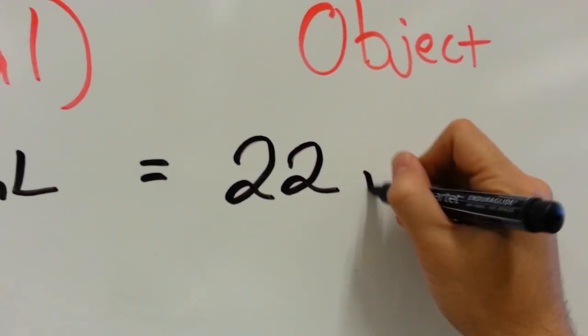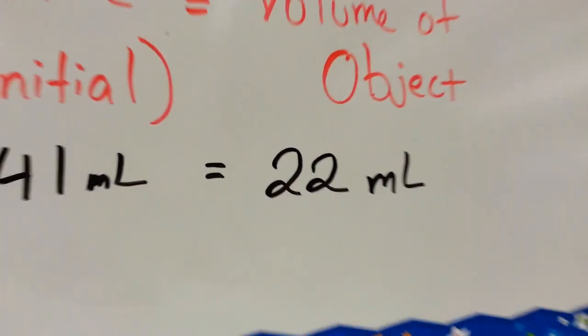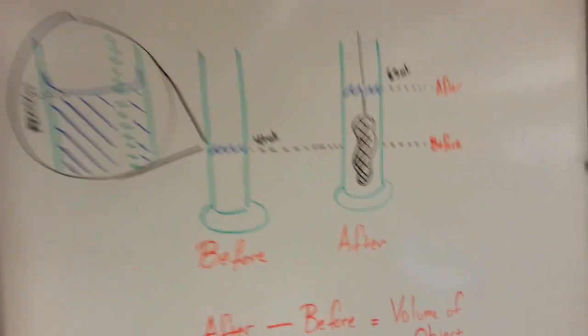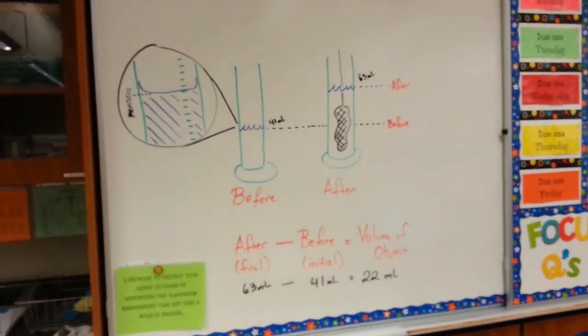But never forget to put your units in there. Otherwise, it's just 22 nothings and that means nothing to me. Alright, so that is finding volume by displacement. Hopefully that was helpful to you guys.